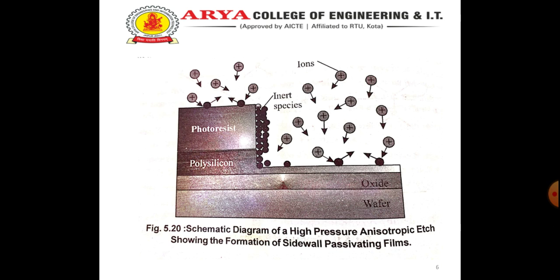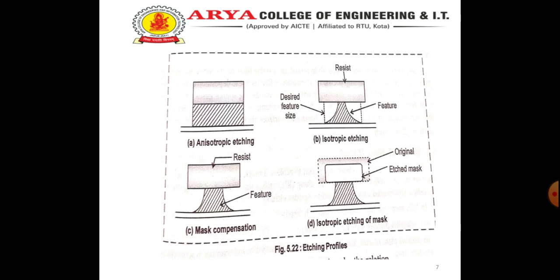The high pressure and isotropic etch can be shown within this slide. Now we are having anisotropic etching and its profiles can be seen in this slide. Anisotropic etching refers to the etching process that attacks the layer significantly faster in the vertical direction than the horizontal direction.